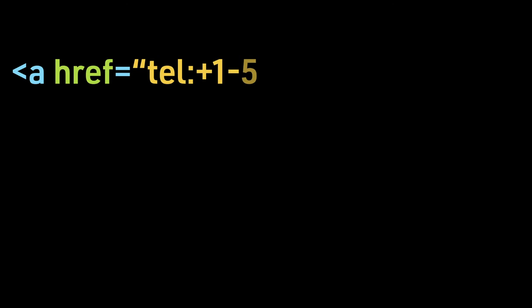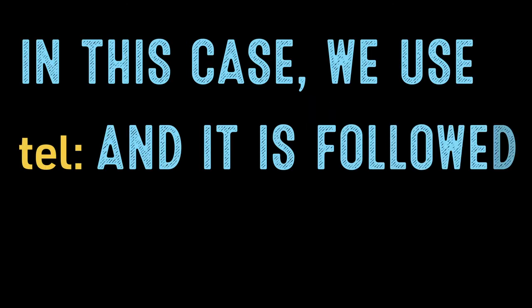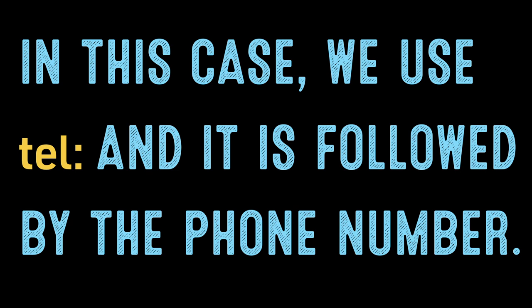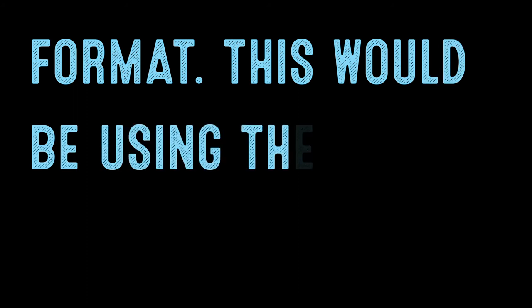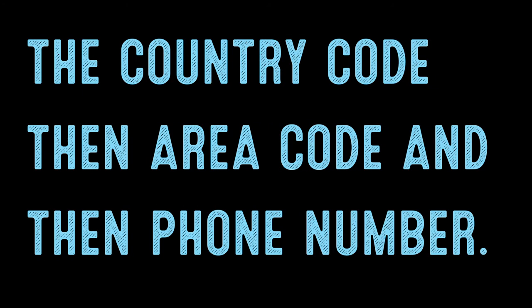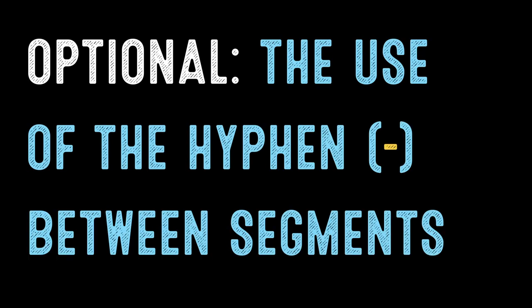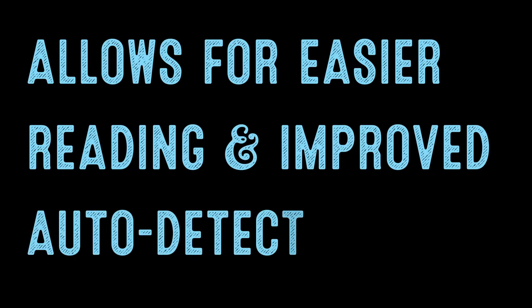If we wanted to create a link to activate a call, how would that be written out? In this case, we use tel:, and it is followed by the phone number. The best practice is to use the international dialing format: the plus sign followed by the country code, then area code, and then phone number. The use of the hyphen between segments is optional but allows for easier reading and improved auto-detection.